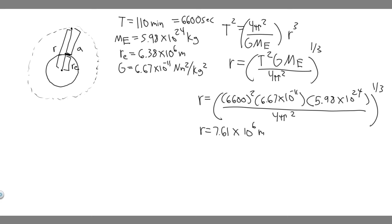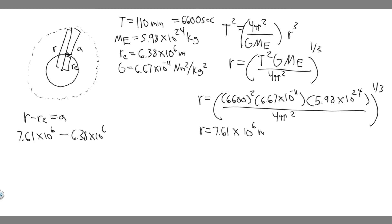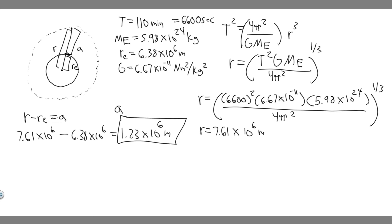This is your radius, but keep in mind we're trying to find the altitude. So we have to subtract the radius of the Earth. r minus Re equals altitude: 7.61 × 10⁶ meters minus 6.38 × 10⁶ meters. You only have to subtract these numbers since the powers of 10 are the same, and you get 1.23 × 10⁶ meters. This is your altitude — your answer to Part A.